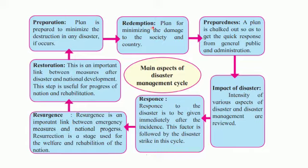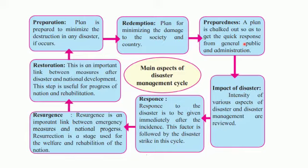Next is redemption — planning for minimizing the damage to society and the country, implementing the plan so there is minimum loss of life and property. Then comes preparedness, where a plan is chalked out to get a quick response from the general public and administration. Once the plan is prepared, it needs to be implemented, and people must be informed so they can participate alongside the administration.